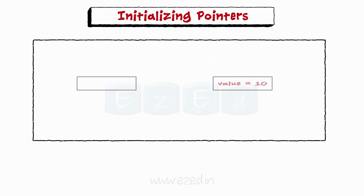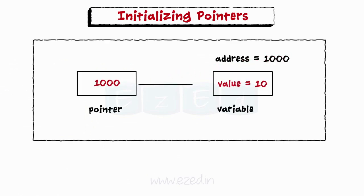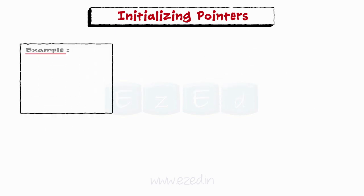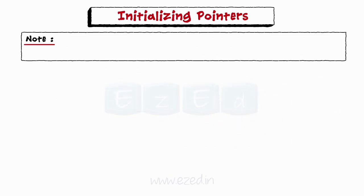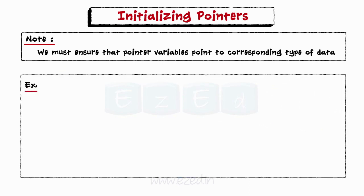Let us move on to initializing pointers. Assigning the address of a variable to a pointer variable is known as initialization. Here is how a pointer with name x initialized. It is initialized by making it point to an integer variable named item using ampersand. Note, we must ensure that pointer variables point to corresponding type of data. The following example will result into an error as we are trying to assign the address of a float variable to an integer pointer.